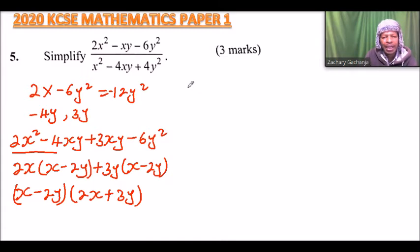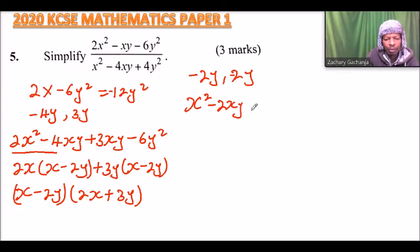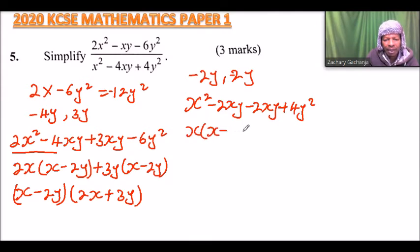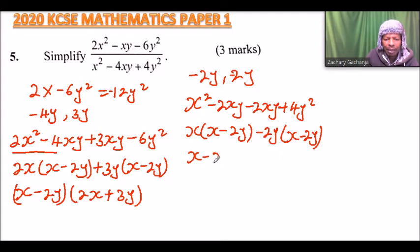Now we do the same for the denominator. The coefficient gives us 4y squared, so we need two numbers that add to minus 4y and multiply to 4y squared. These are minus 2y and minus 2y. We rewrite as x squared minus 2xy minus 2xy plus 4y squared. Factoring out x from the first two terms gives x(x minus 2y), and factoring out minus 2y from the last two terms gives minus 2y(x minus 2y).